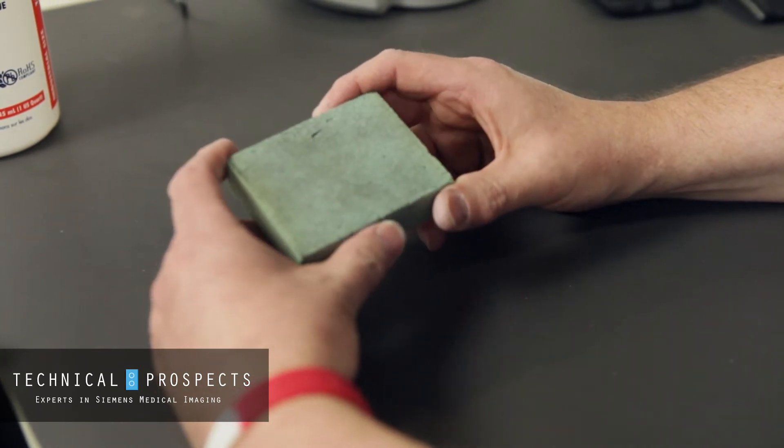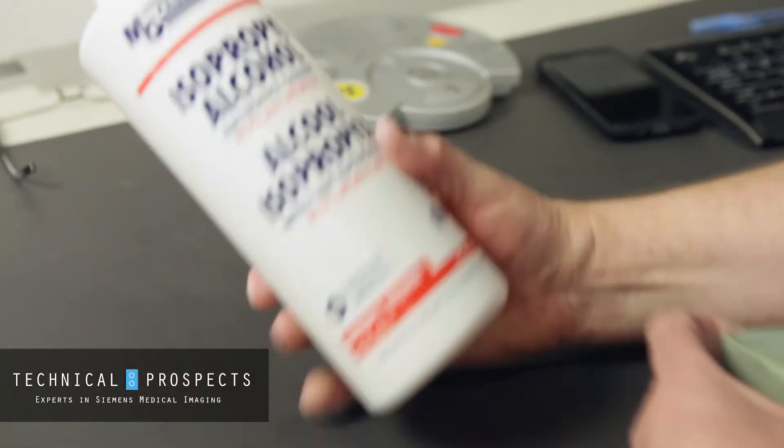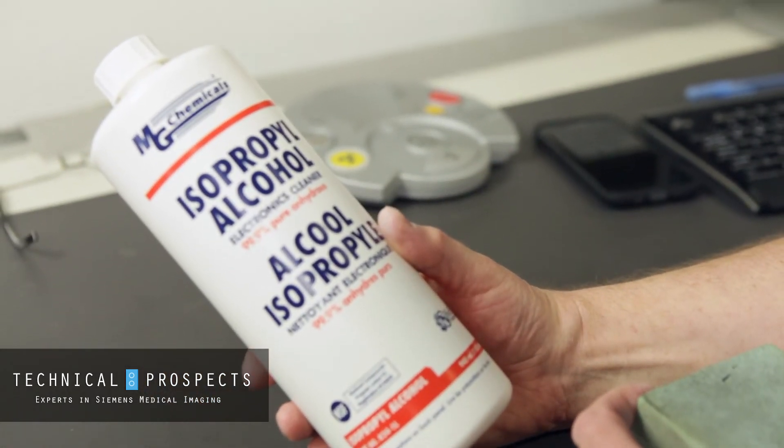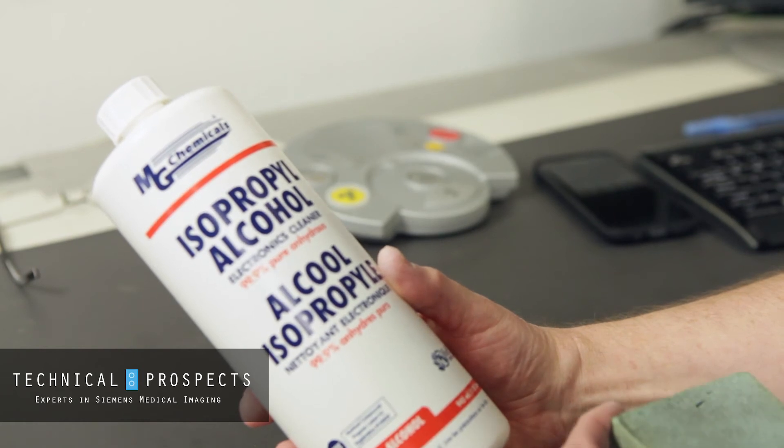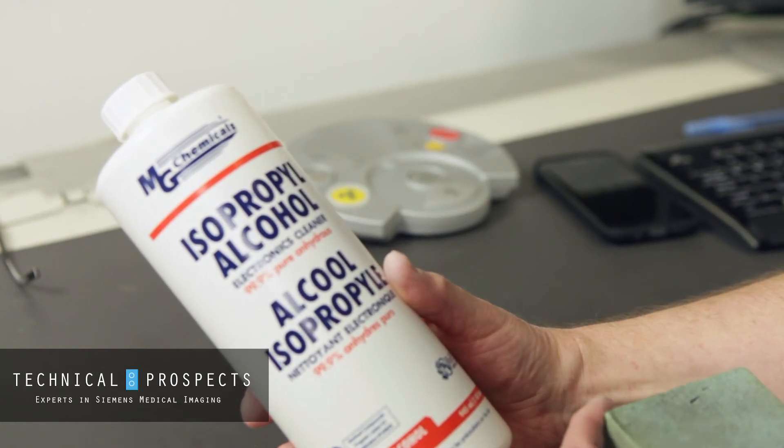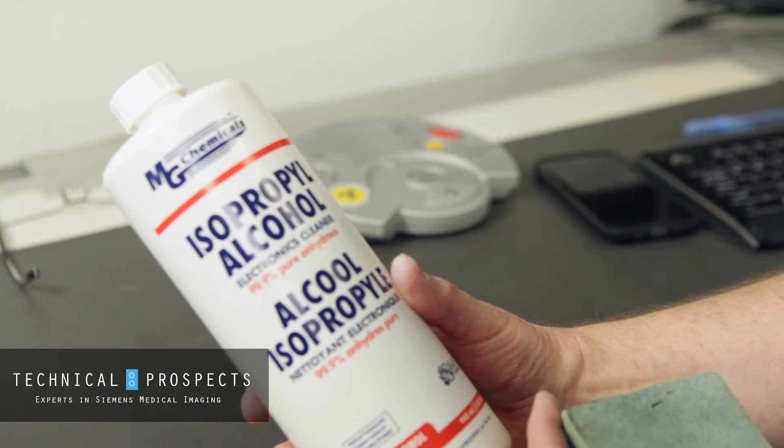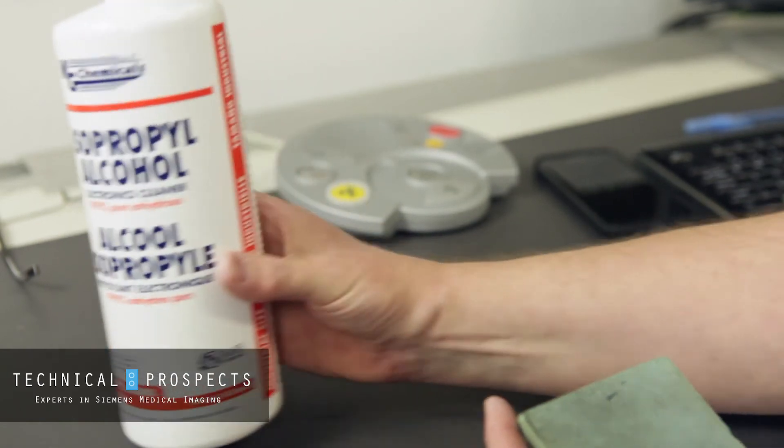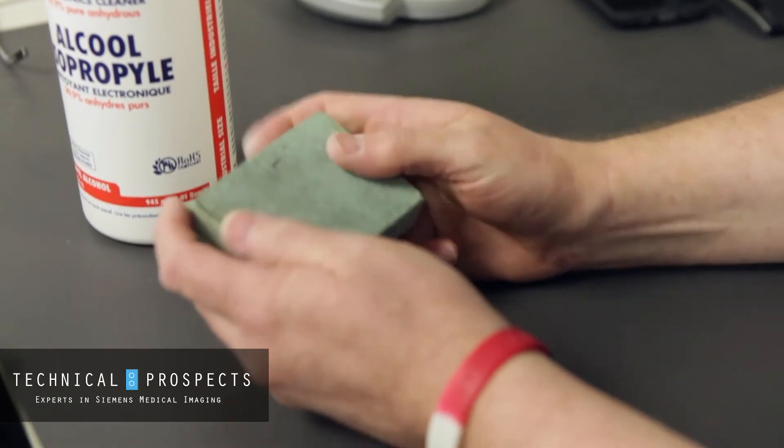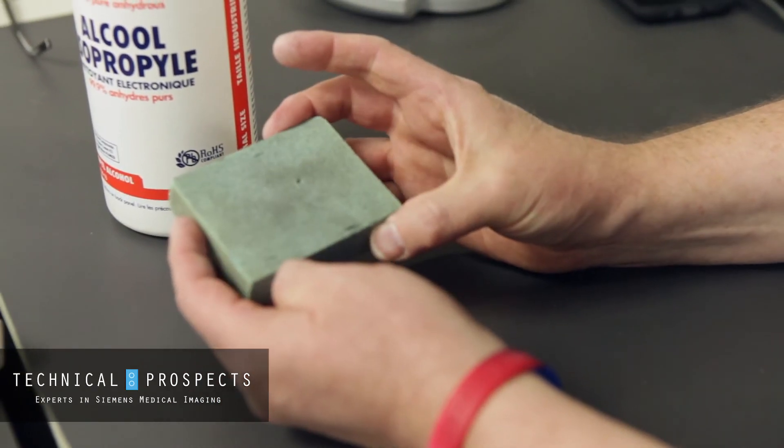We can simply clean that by using some very high grade isopropyl alcohol. In this case, we use the electronics cleaner which is 99.9% pure. Simply use a small wash basin, pouring some of this over the sponge, working the sponge with our fingers to release all the carbon dust.